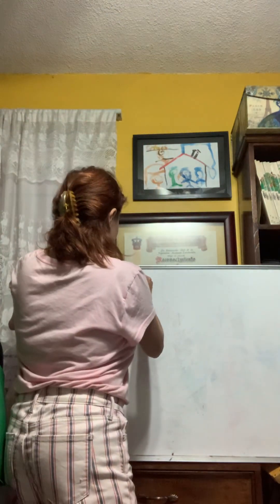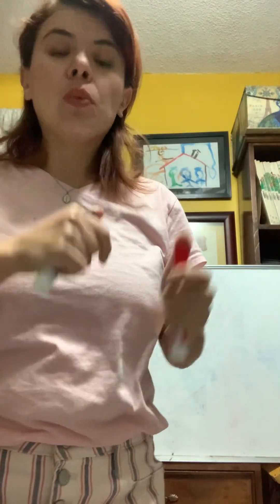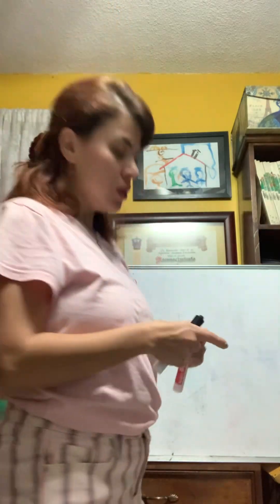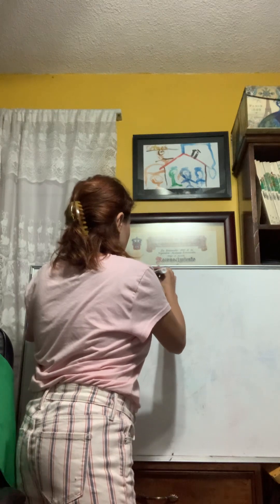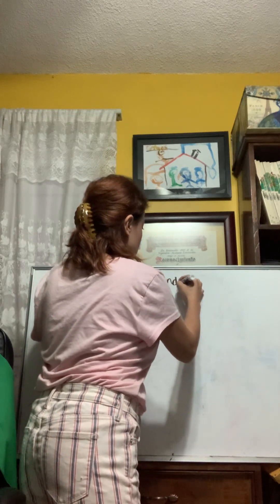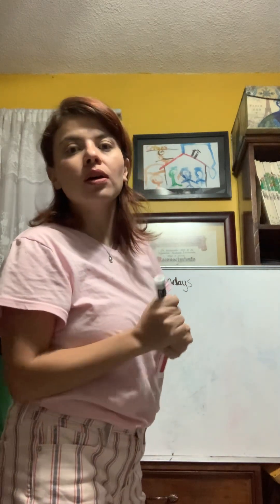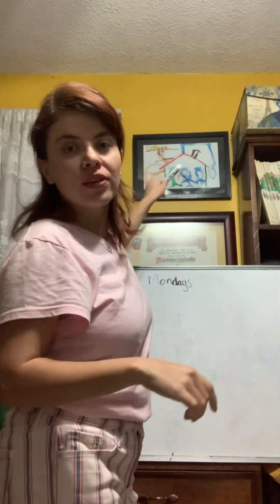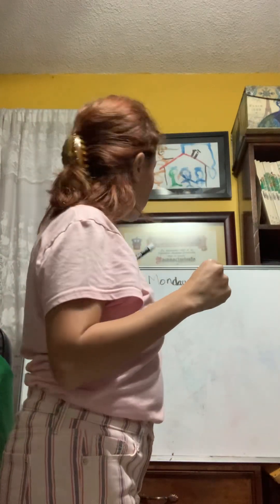The first preposition of place is 'on.' This is a preposition we use all the time. For example, 'on Mondays,' when something is on a table, or 'that picture is on the wall.' We use 'on' to explain something that is touching or resting on a surface.